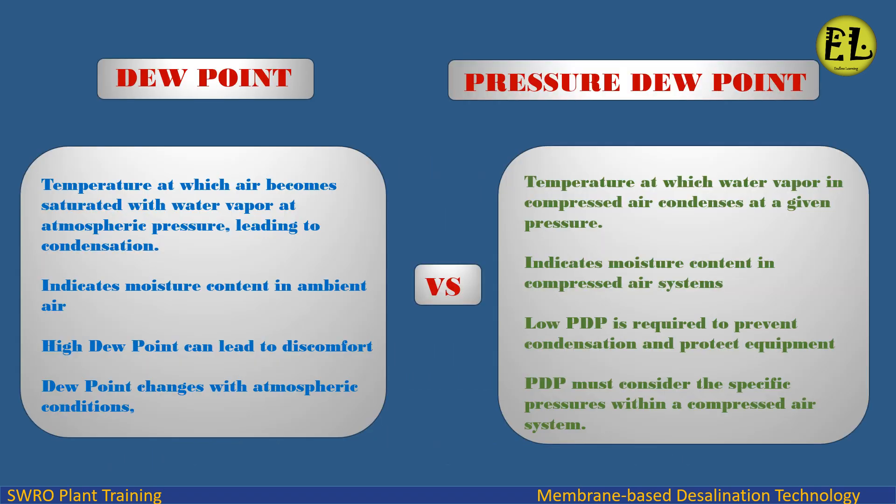Dew point is the temperature at which air becomes saturated with water vapor at atmospheric pressure, leading to condensation. It indicates moisture content in ambient air, and a high dew point can lead to discomfort. Dew point changes with atmospheric conditions. Pressure dew point is the temperature at which water vapor in compressed air condenses at a given pressure, indicating moisture content in compressed air systems. A low pressure dew point (PDP) is required to prevent condensation and protect equipment.